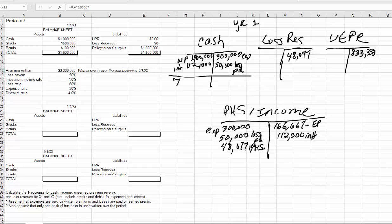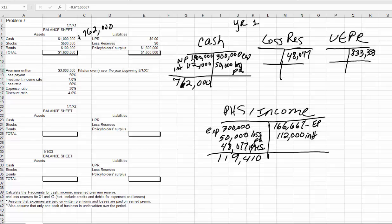Now let's get our balances. The cash balance works out to $762,000, and the debit side to policyholder surplus is $119,410. So we have an increase in cash of $762,000, an increase in our loss reserve of $48,077, an increase in our unearned premium reserve of $833,333, and a decrease in policyholder surplus of $119,410. Our cash account is $1,000,000 plus the $762,000. Stocks and bonds are $600,000 each. Our unearned premium reserve is $833,333 and our loss reserve is $48,077.